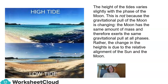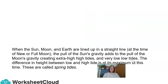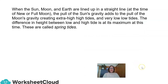The height of the tides varies slightly with the phase of the Moon. This is not because the gravitational pull of the Moon is changing — the Moon has the same amount of mass and therefore exerts the same gravitational pull at all phases. Rather, the change in heights is due to the relative alignment of the Sun and the Moon. When the Sun, Moon, and Earth are lined up in a straight line at the time of New Moon or Full Moon, the pull of the Sun's gravity adds to the pull of the Moon's gravity, creating extra high tides and very low tides. The difference in height between low and high tide is at its maximum at this time, and they are called spring tides.